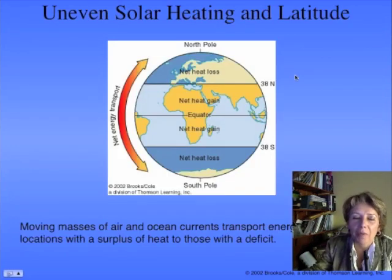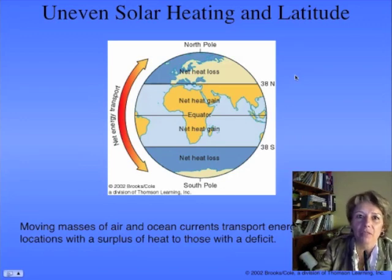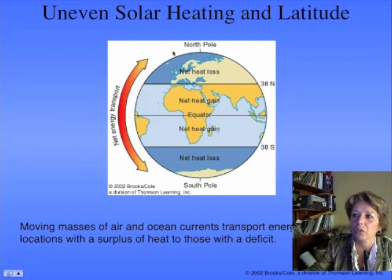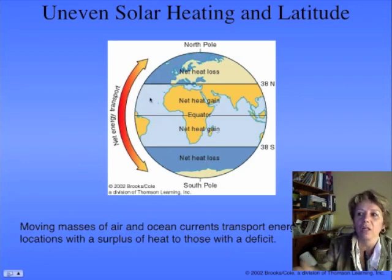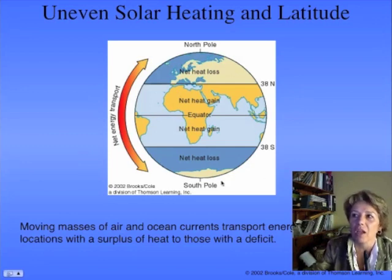We're going to talk about currents. Remember there were four things that influenced currents, and one of them is uneven solar heating. You get it warmer near the equator and cooler near the poles, so that causes movements of air and movements of ocean. Otherwise the center of the earth would boil away the water, and the water near the poles would freeze over if you didn't have currents.